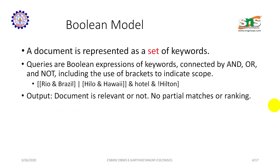The boolean model: a document is represented as a set of keywords. Queries are boolean expressions of keywords connected by AND, OR, NOT, including use of brackets to indicate scope. For example: Rio AND Brazil, Hilo OR Hawaii, Hotel NOT Hilton. The output: a document is either relevant or not — no partial matches or ranking.